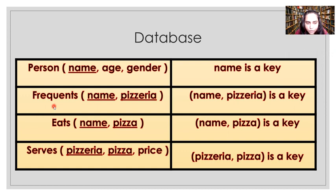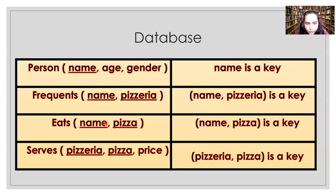The frequent table contains name and pizzeria, where name and pizzeria together form the primary key. This table contains the name of a person and the pizzeria they often visit — for example, the name Mary and the pizzeria Domino's, meaning Mary often goes to Domino's. The next table is eats, with columns name and pizza, telling you that a particular person eats a particular pizza — for example, Mary eats pepperoni pizza.